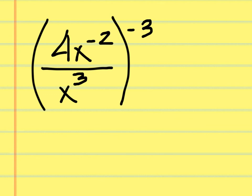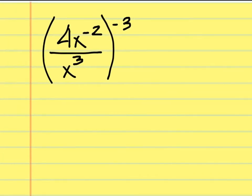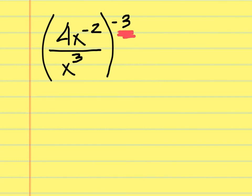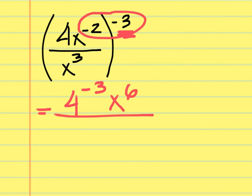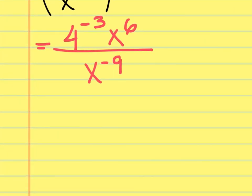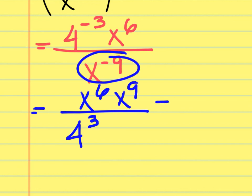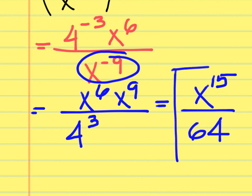Final problem: take the negative third power of the quantity (4x to the negative 2 over x to the third). Distribute the negative third exponent to everything inside, including the 4 — the most common mistake is leaving 4 unchanged. So 4 becomes 4 to the negative third, x to the negative 2 becomes x to the sixth, and x to the third becomes x to the negative ninth. Rearranging: 4 to the negative third goes to the denominator as 64, x to the sixth stays on top, and x to the negative ninth goes to the top as x to the ninth. Combined, the numerator is x to the fifteenth over 64.